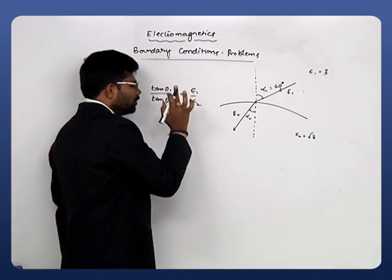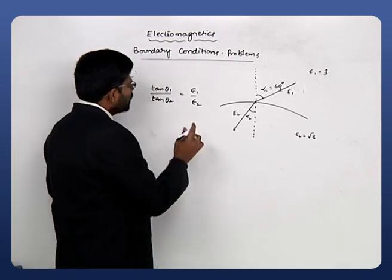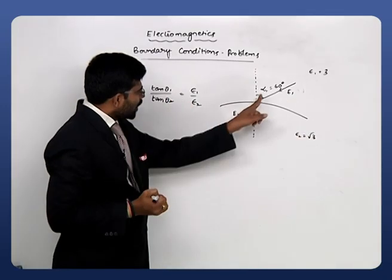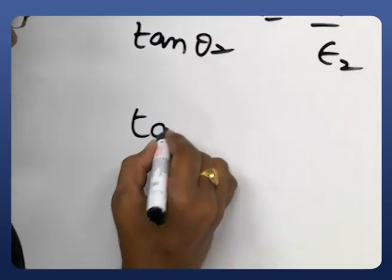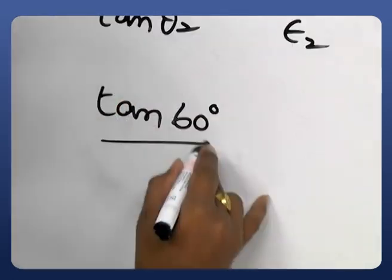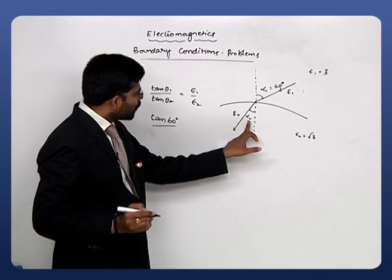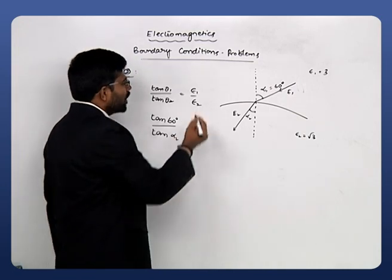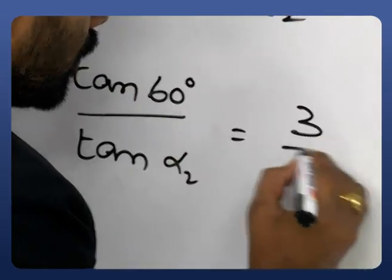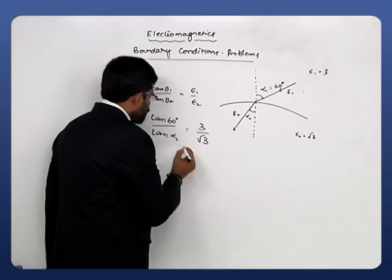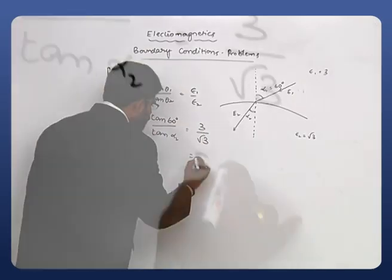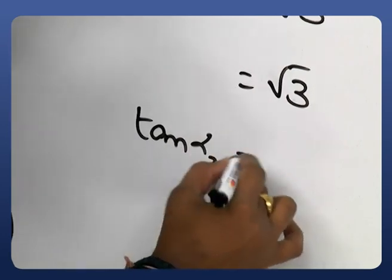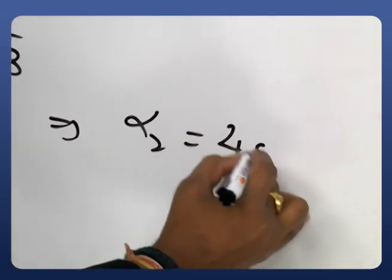Using the law of refraction for electric fields: tan θ₁ / tan θ₂ = ε₁ / ε₂. Substituting θ₁=α₁=60°, ε₁=3, ε₂=√3: tan 60° / tan α₂ = 3/√3 = √3. Since tan 60° = √3, we get √3 / tan α₂ = √3, so tan α₂ = 1, which gives α₂ = 45°.